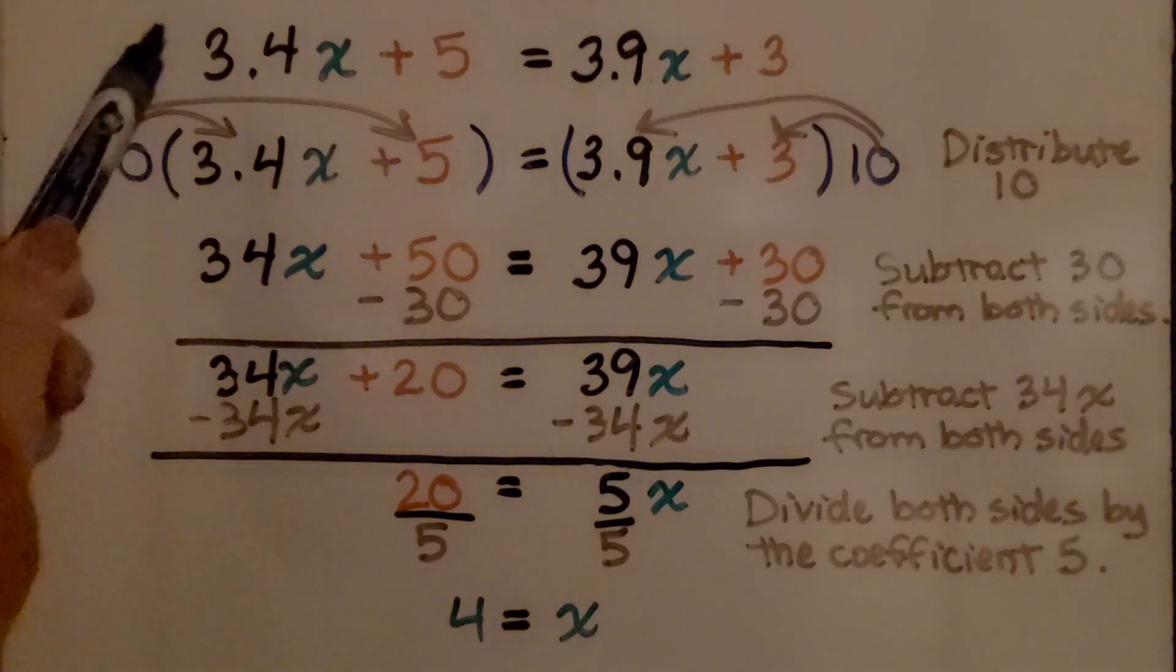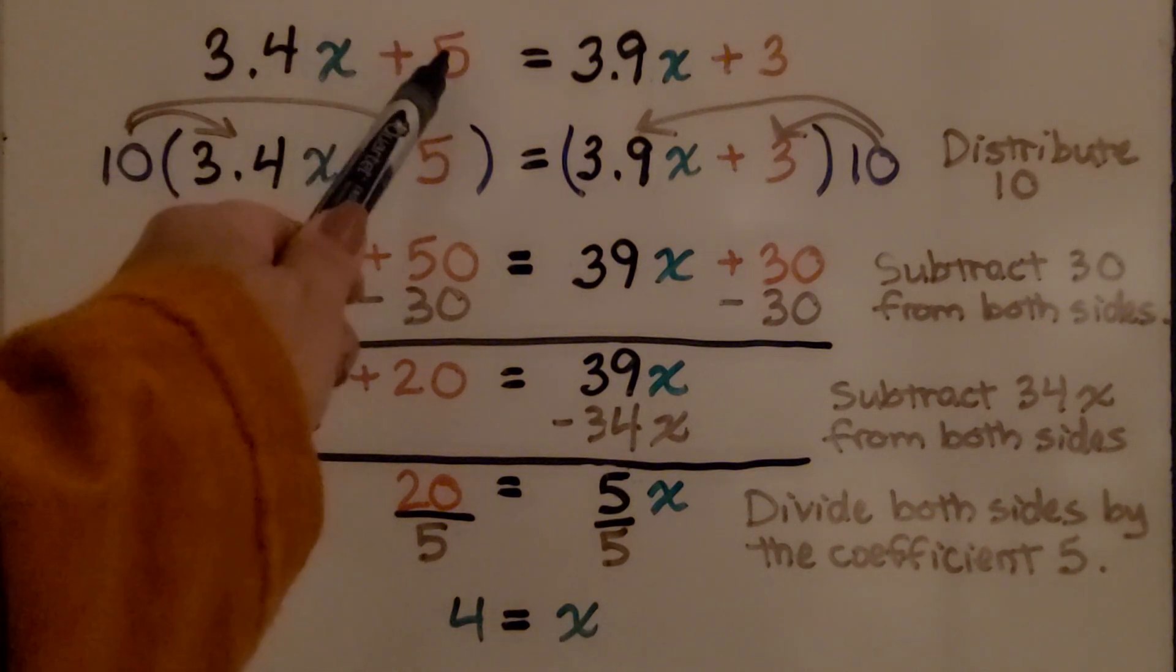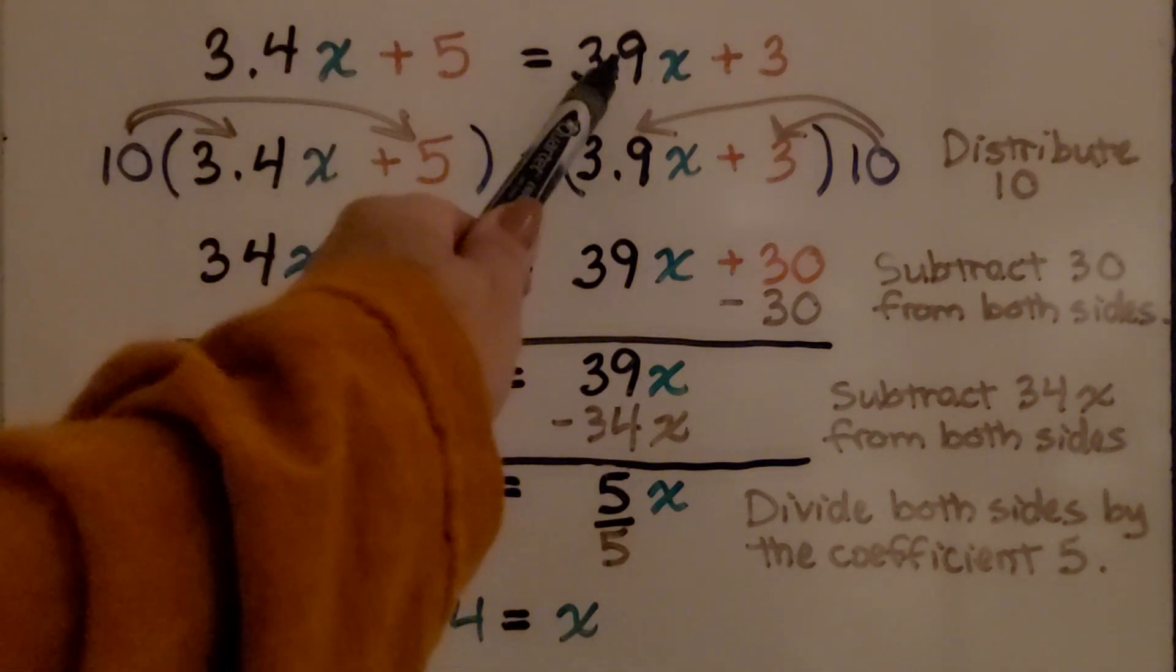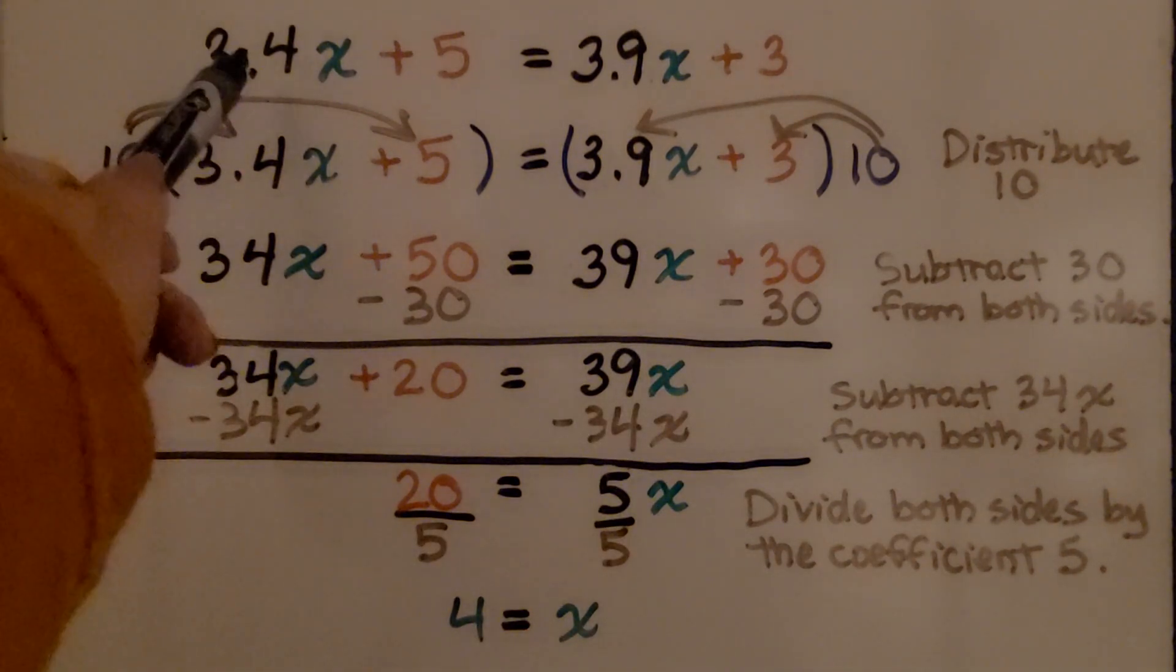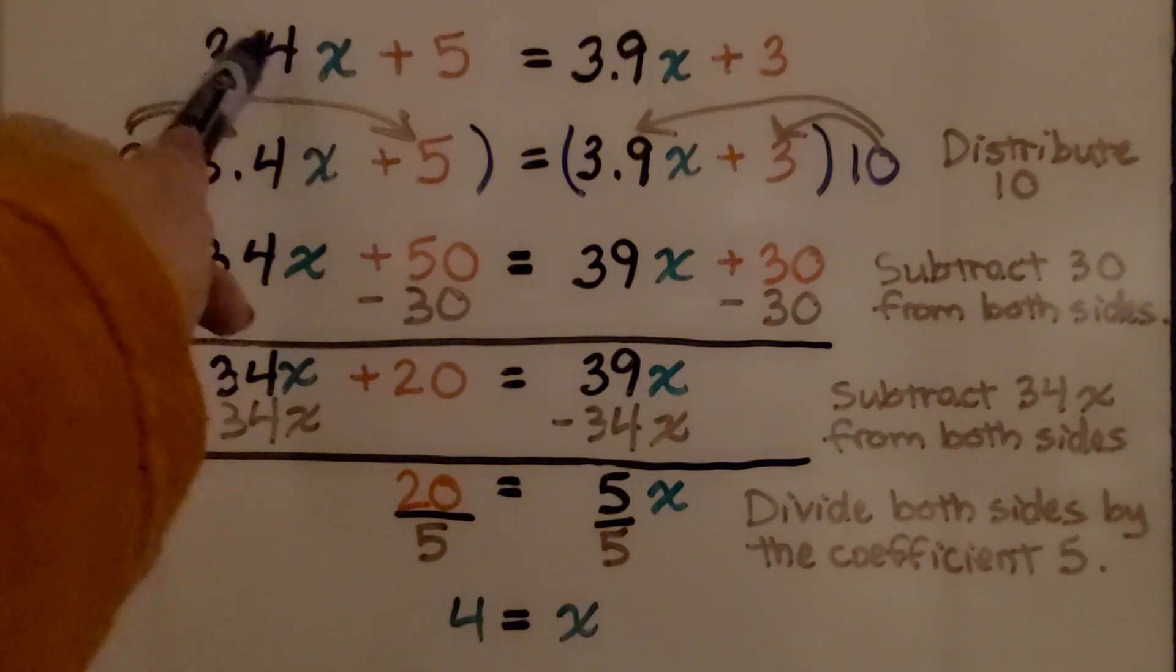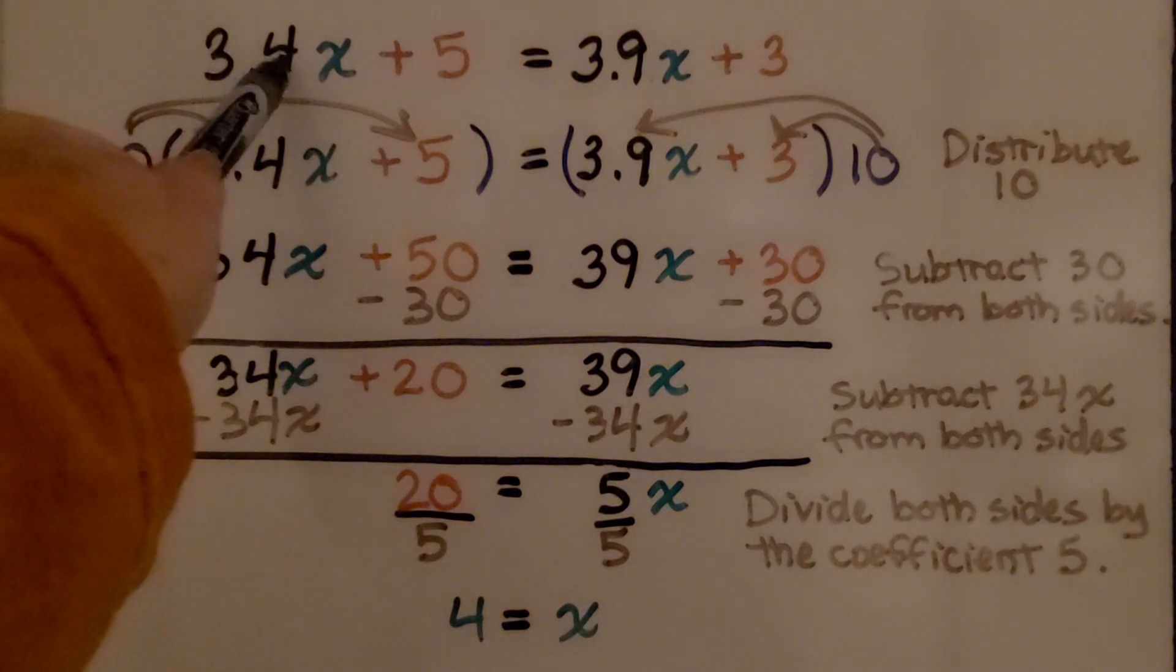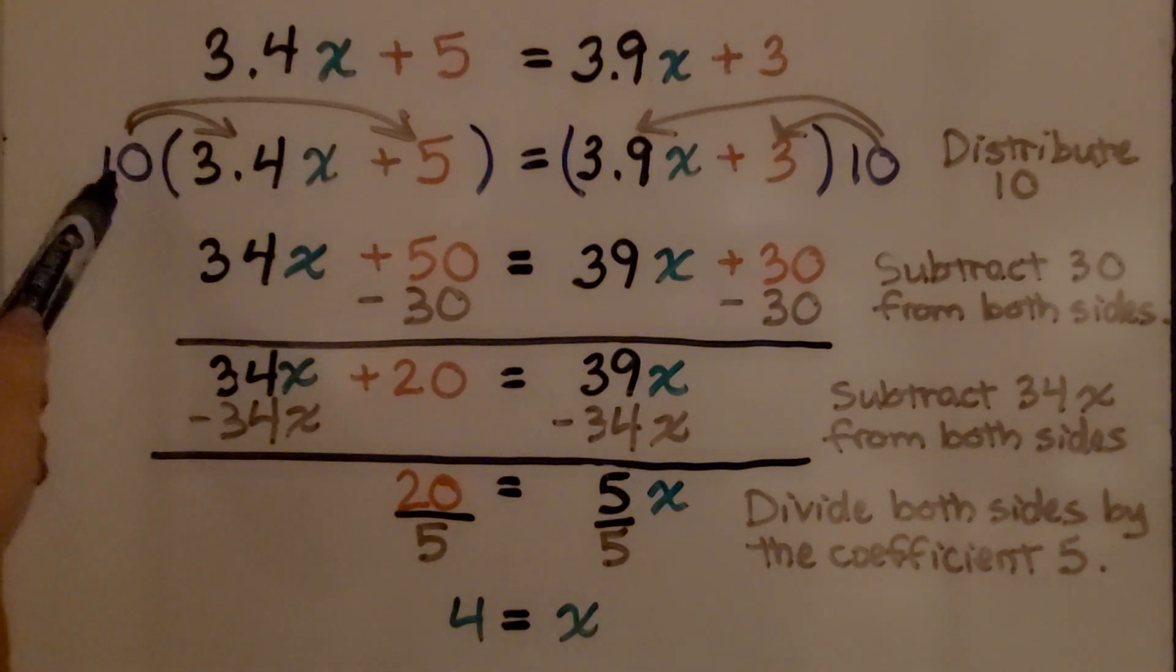So here we have an equation 3.4x plus 5 equals 3.9x plus 3. We want to remove these decimal points, turn these into whole numbers. Since this is tenths, we can multiply by 10. That's our power of 10, we're going to do 10.